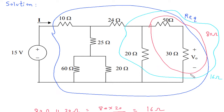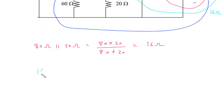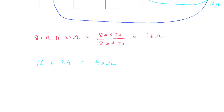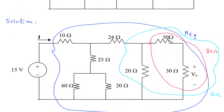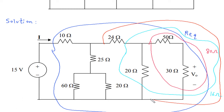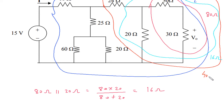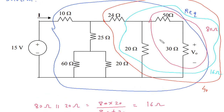Then this 16 Ohm and 24 Ohm are in series. So 16 plus 24 Ohm is equal to 40 Ohm.